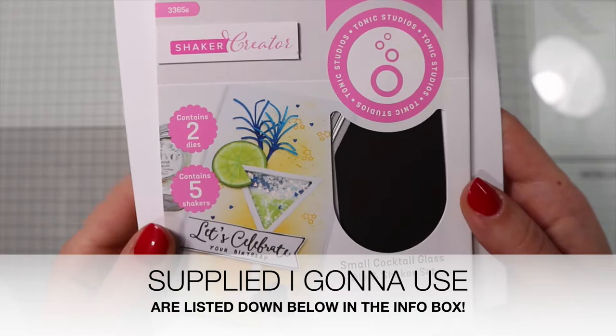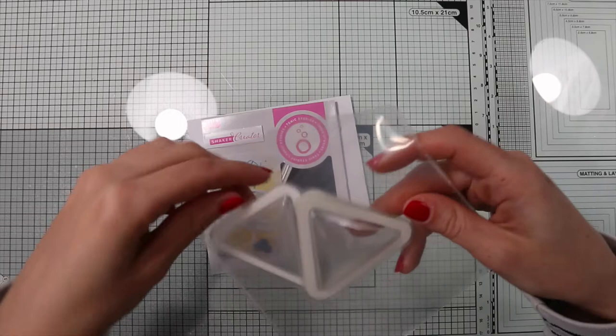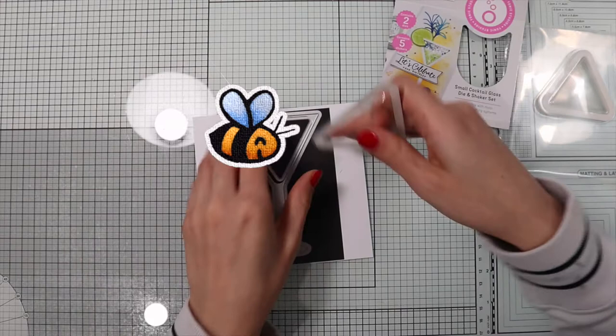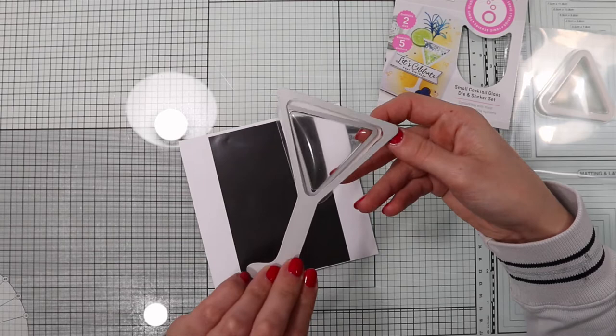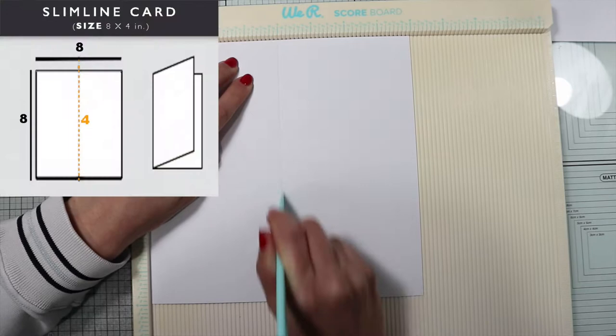So with this set today I'm going to create with you a simple but effervescent slimline shaker card. In this set we find the five blisters to create the clear window for the shaker glass, but we can use a piece of acetate and some foam tape instead, like traditional shaker cards.